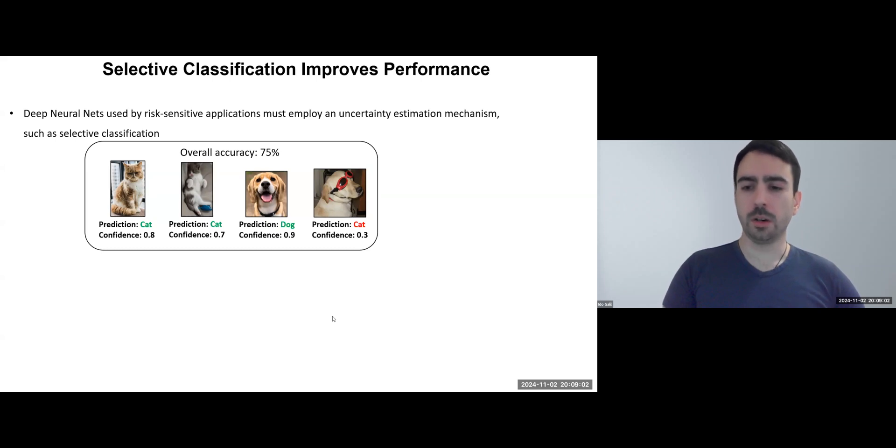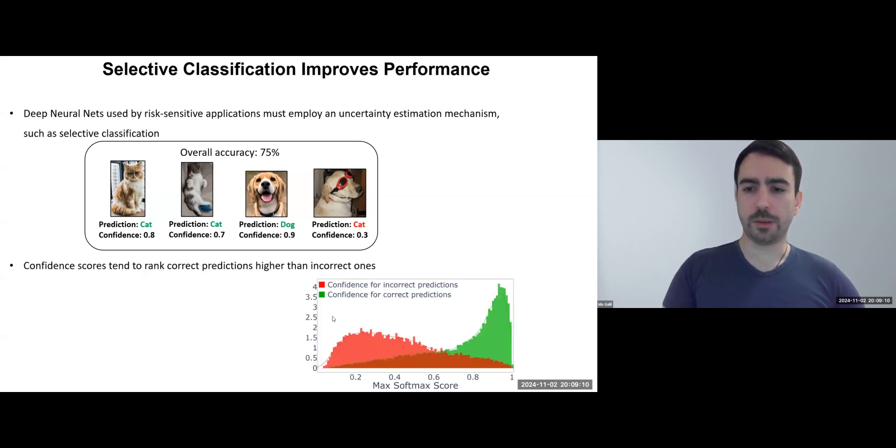In this example, without selective classification, the model's overall accuracy is 75%. This histogram illustrates how confident scores for correct predictions shown in green tend to be high and close to 1, while incorrect predictions in red are lower.